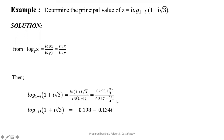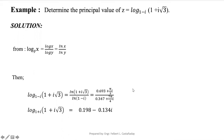Simplifying — once in polar form you can use your calculator to determine the final answer — the result is 0.198 minus 0.134i. Let me know if you get this answer correctly or if you need clarification.